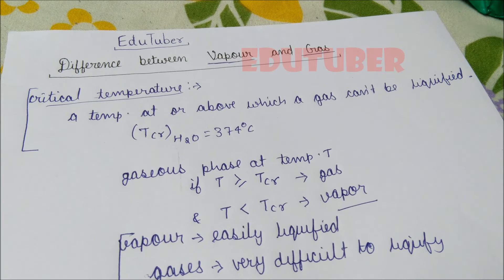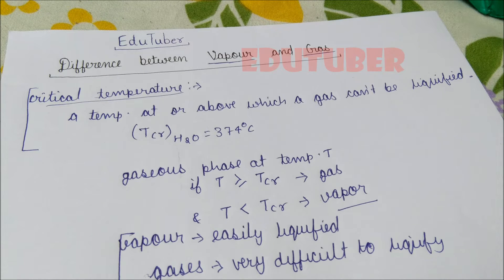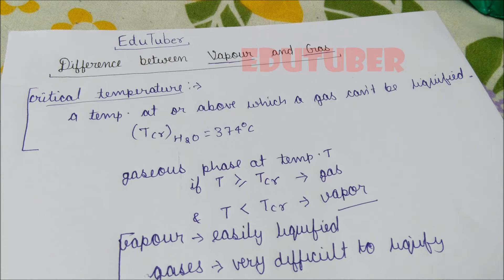Before we start the topic — difference between vapor and gas — let me first introduce you to this concept called critical temperature. I'm sure you have read about it in your high school studies, but I will give you a sneak peek. Critical temperature is defined as a temperature at or above which a gas cannot be liquefied.